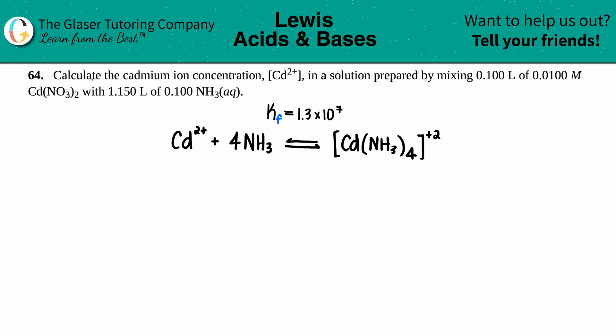Number 64: calculate the cadmium ion concentration, Cd²⁺, in a solution prepared by mixing 0.100 liters of a 0.0100 M Cd(NO₃)₂ with 1.150 liters of 0.100 M NH₃ aqueous solution. So we want to find out what the cadmium ion concentration is.